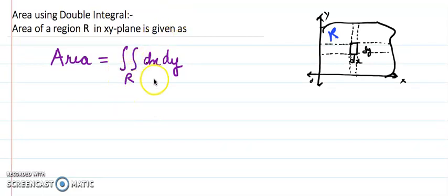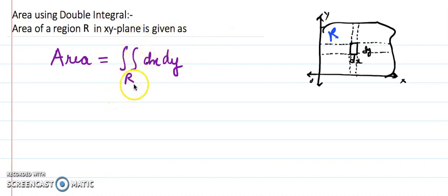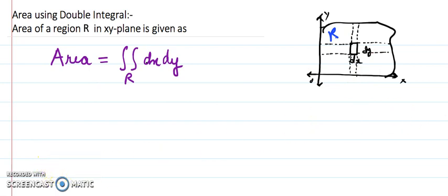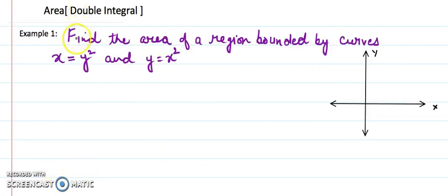In this lecture I'll share about the area concept using double integrals. You have already used calculation of area using a definite integral, but if we want to use the double integral for calculation of area of any region in the XY plane, this formula will be used: double integration of dx dy over region R gives us the area. When you don't see any function, this double integral represents area because dx dy is the elementary area of a small rectangle, and when you integrate through x and y it gives the area of the whole region.